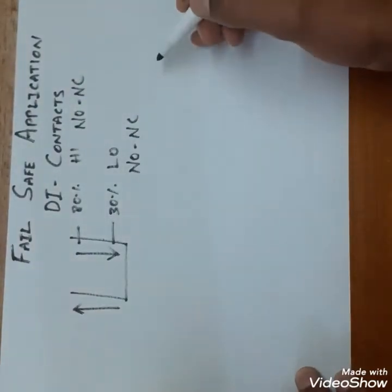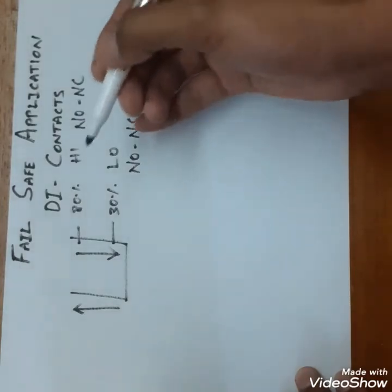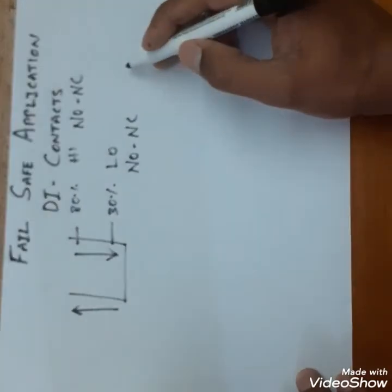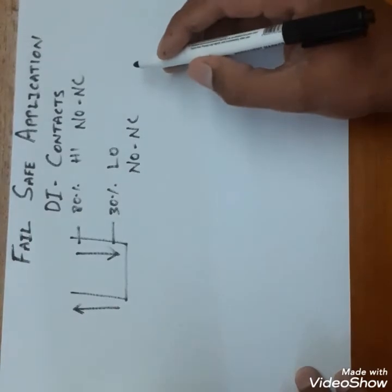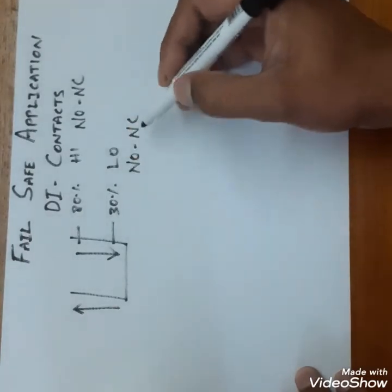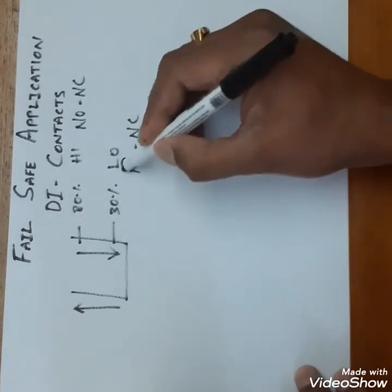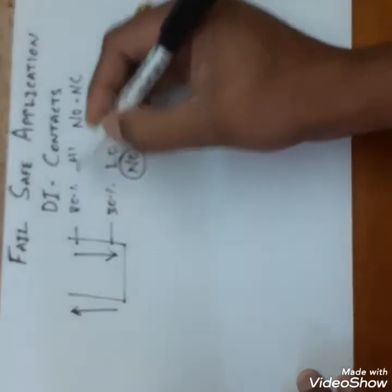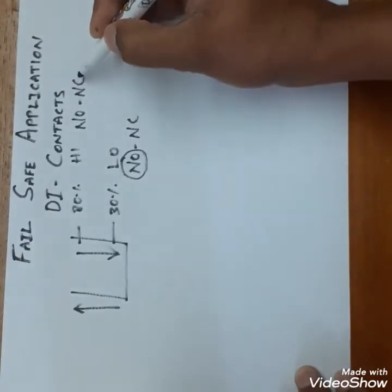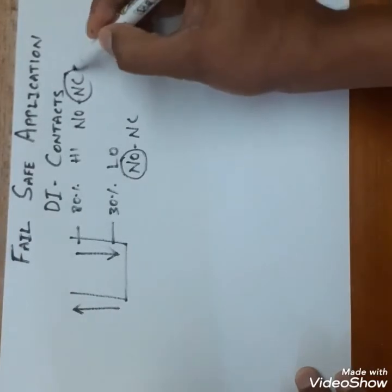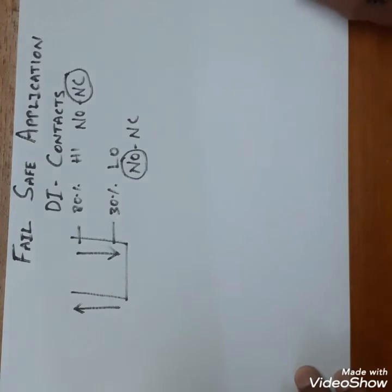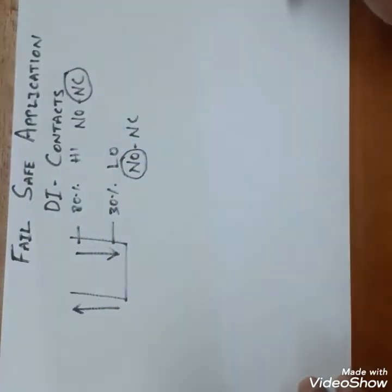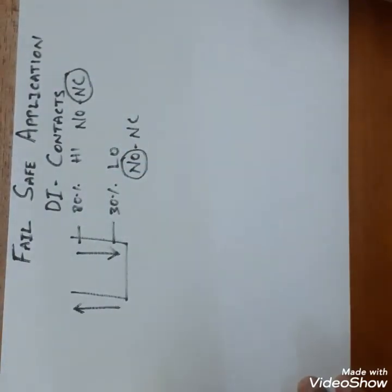For falling applications we should always use NO normally open contact, and for rising applications we should always use an NC contact. I am going to explain why we need this particular contact for rising and falling applications.